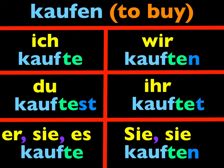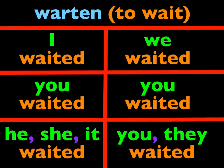Now, with verbs whose stem ends in a D or a T, we need an extra E for pronunciation's sake. For example, look at the verb warten. When you take the -en off of warten, you have the stem ending in a T. So we need to add that extra E first before adding the -TE. So here's what you end up with.